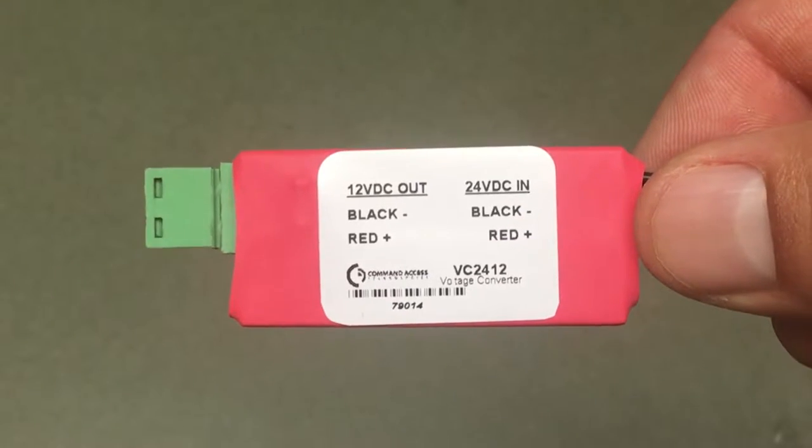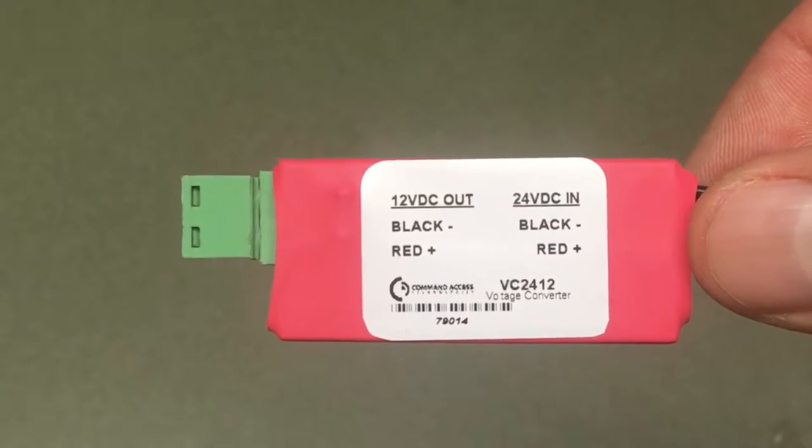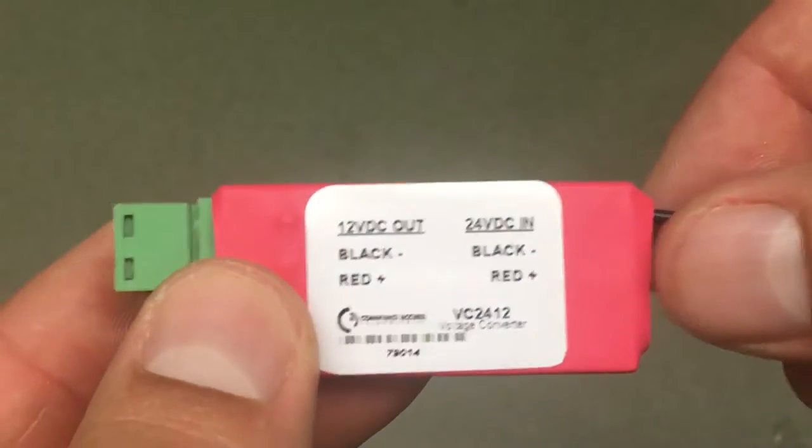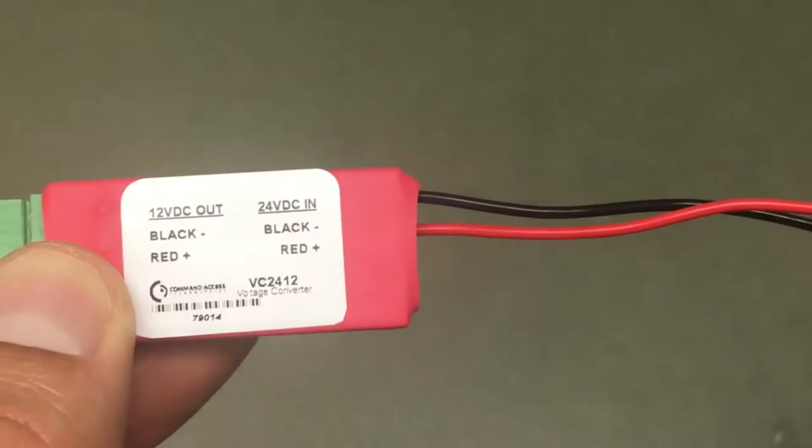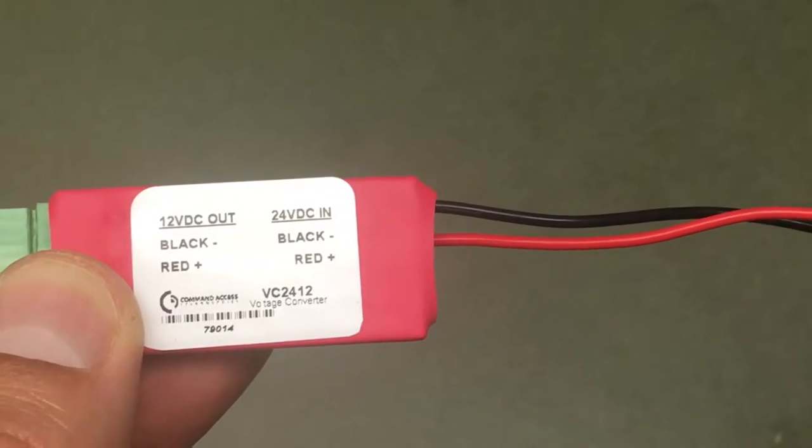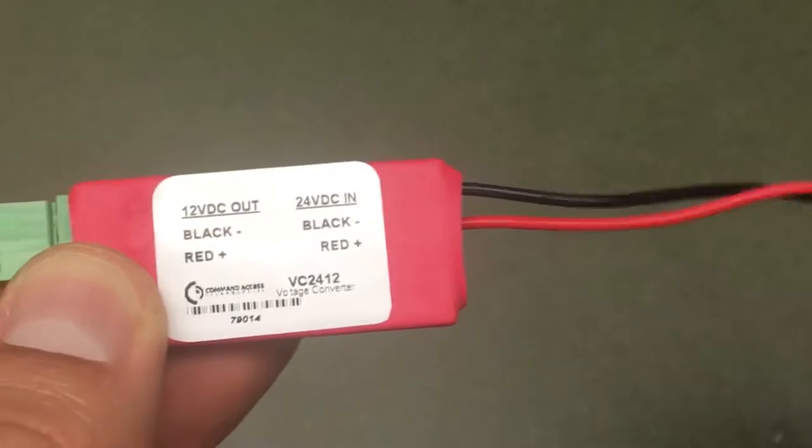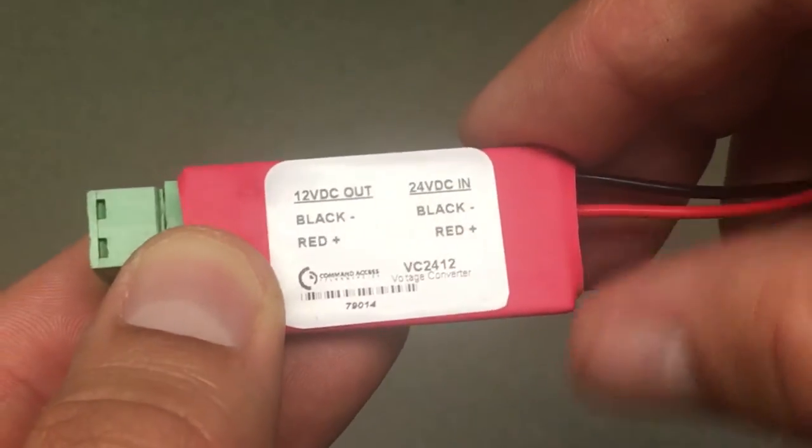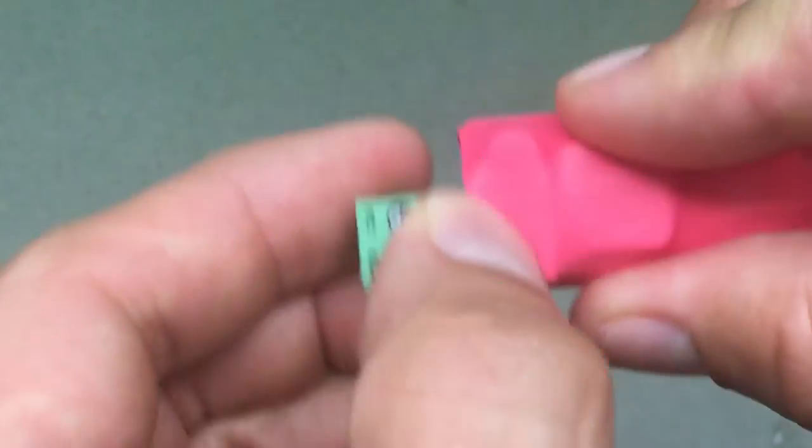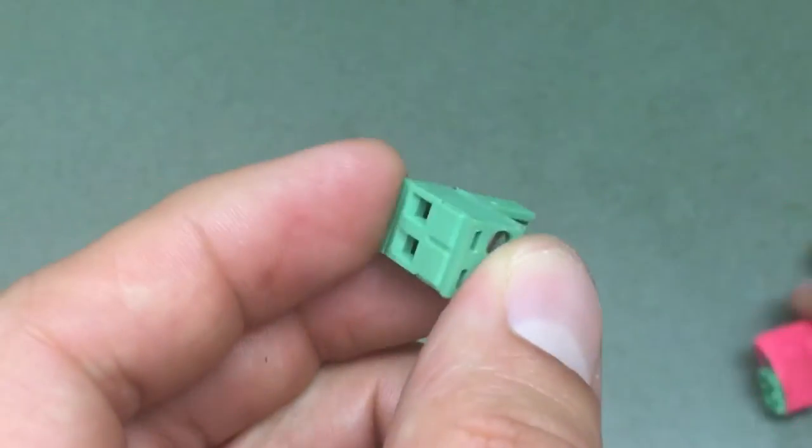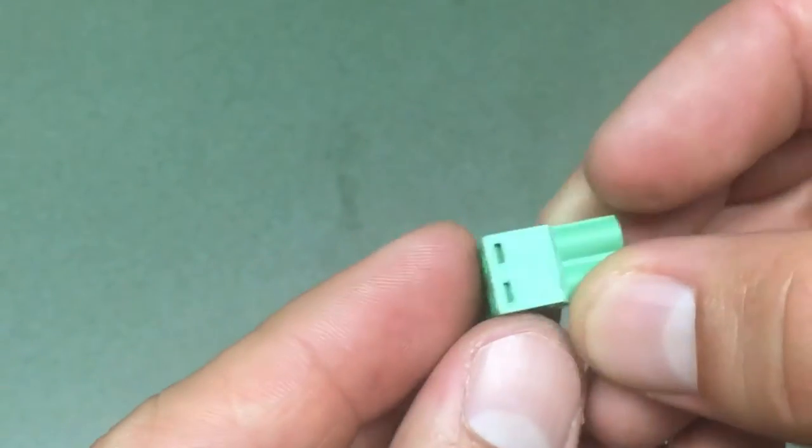The VC2412 is roughly a 2 by 1 inch converter module. It's supplied with two 18 gauge wires with a 6 inch lead on one side. The other side has a Euro connector which is removable so you can easily terminate the wires in the screw terminals and then reattach.